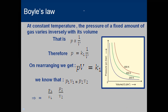Volume is inversely proportional to pressure — whenever pressure increases, volume decreases; when pressure decreases, volume increases. When we remove the proportionality sign, we introduce the constant k1, which is Boyle's proportionality constant. So P equals k1 divided by V, and rearranging gives us PV equals k1.